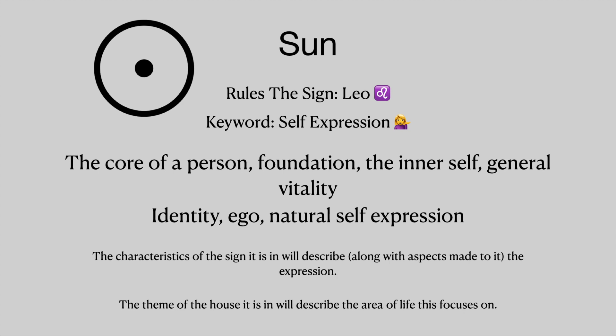First is the sun. This rules the sign of Leo and the keyword is self-expression. This is the core of a person — foundation, the inner self, general vitality, identity, ego, and natural self-expression. The characteristics of the sign it is in will describe, along with the aspects made to it, the expression. The theme of the house it is in will describe the area of life this focuses on. I've put those last two sentences on each slide since they apply to every planet, so I won't repeat them every single time.